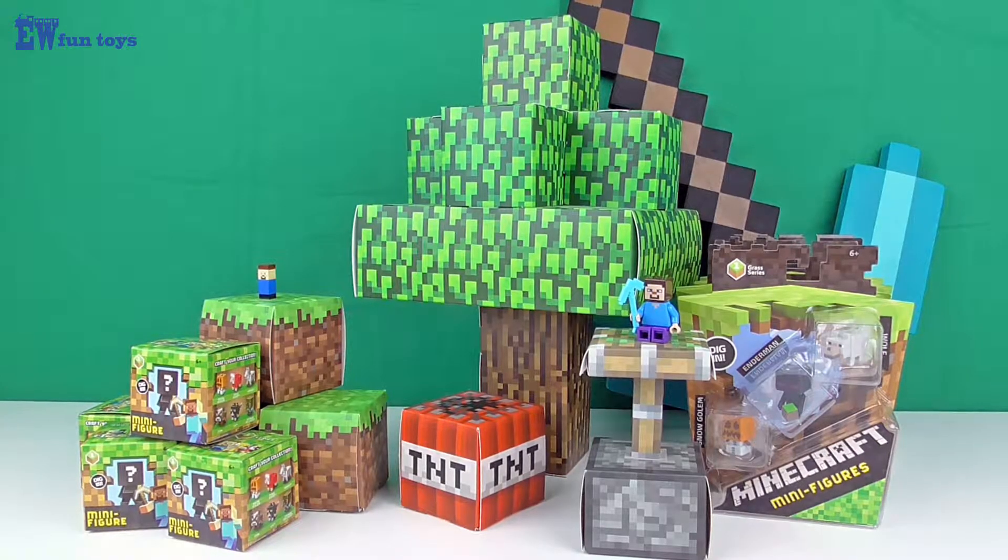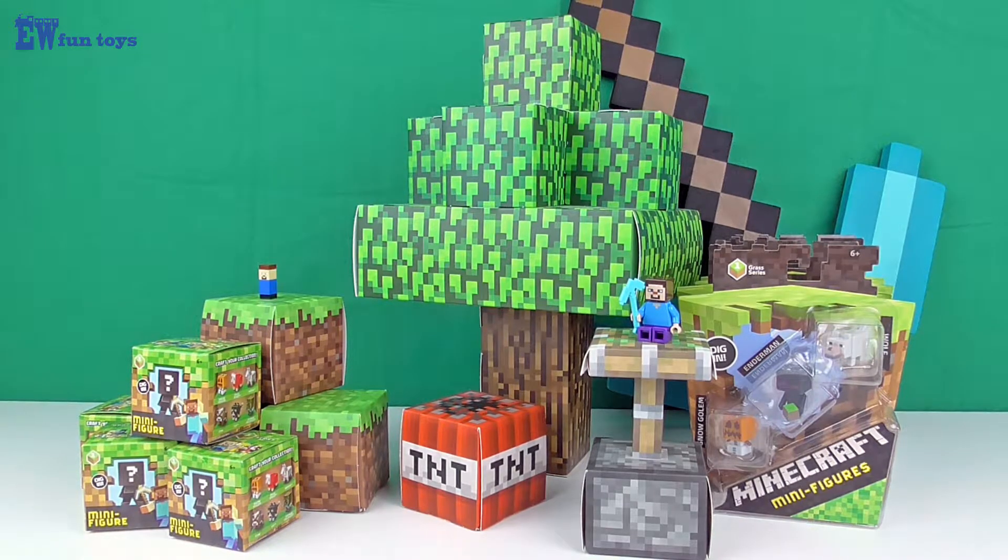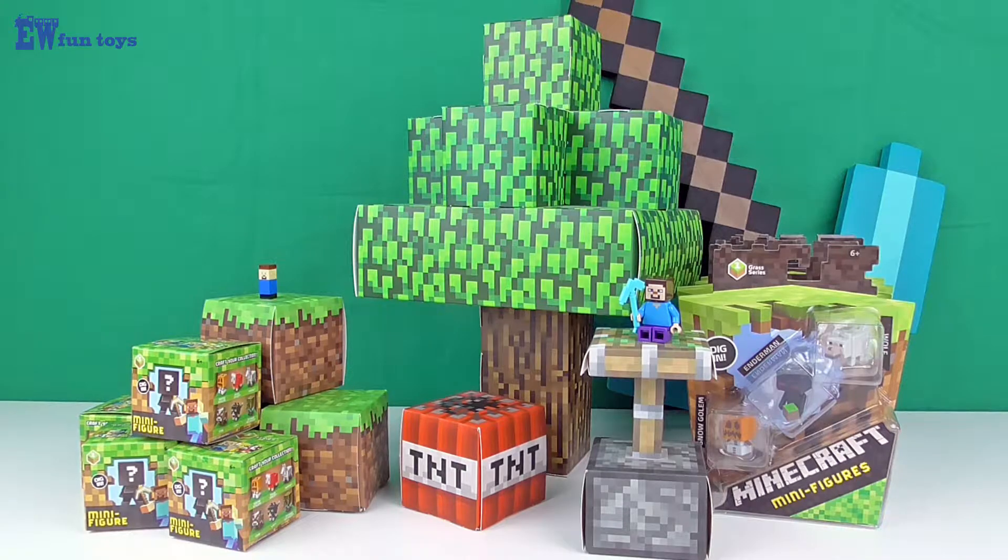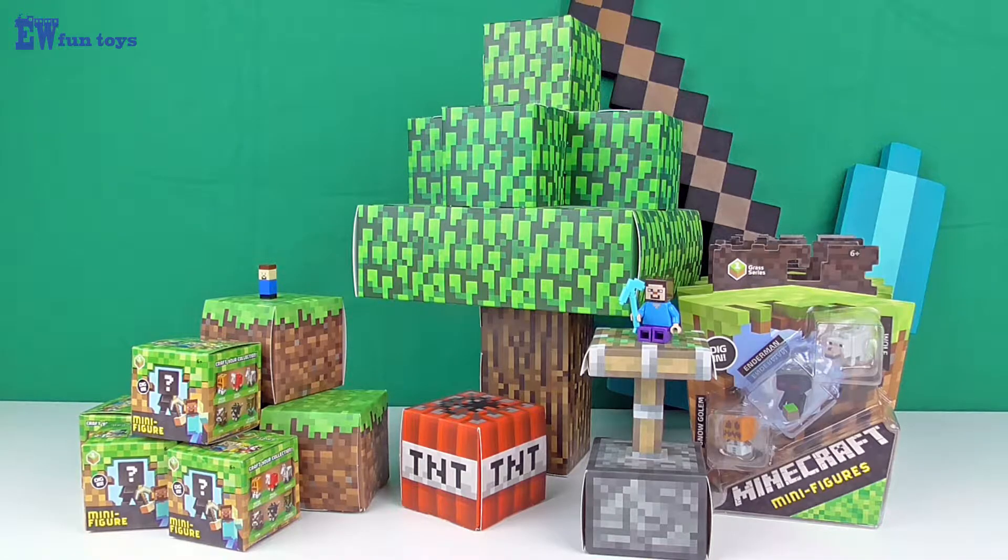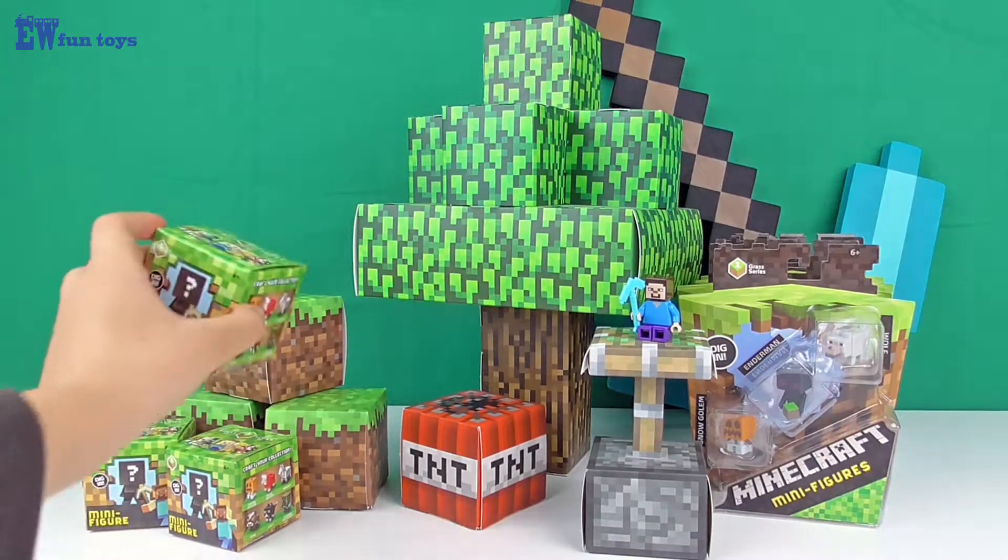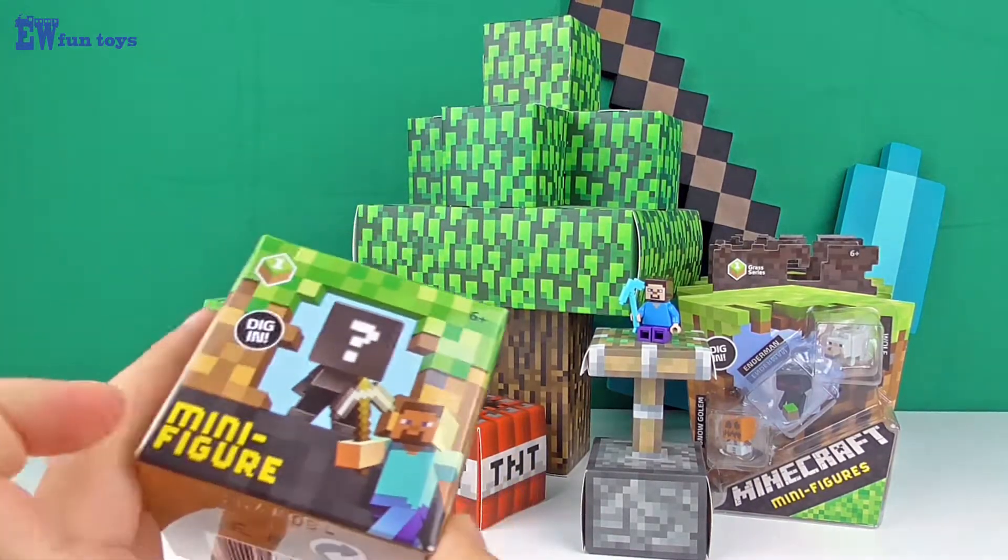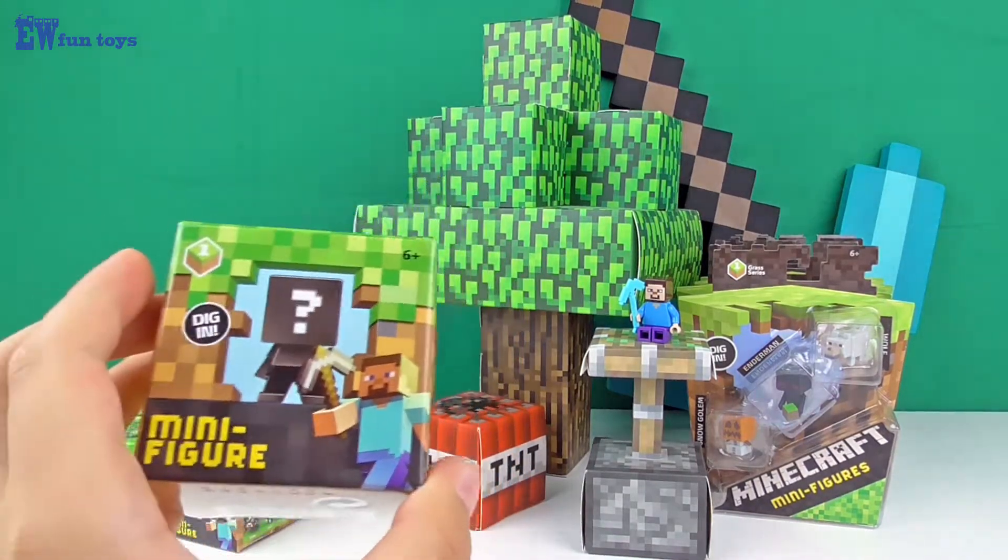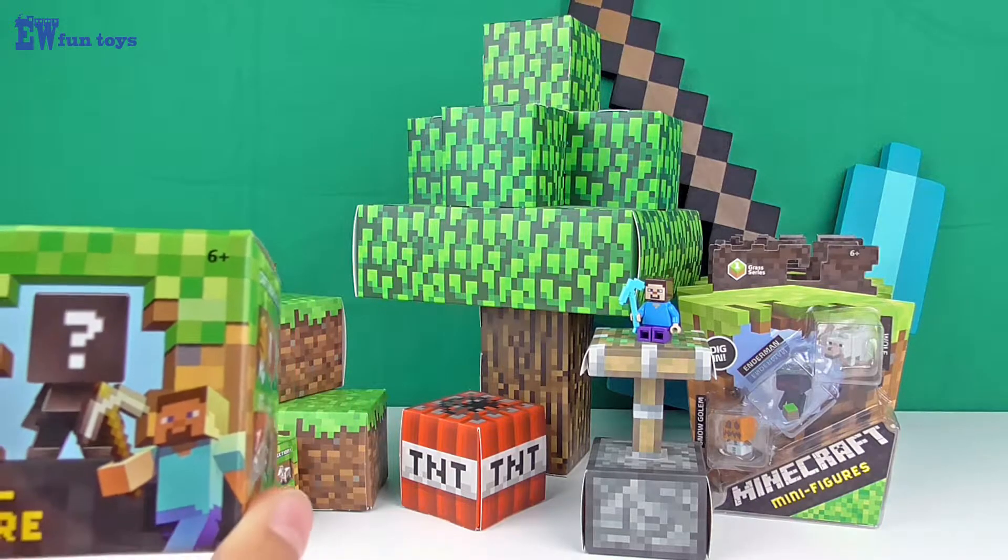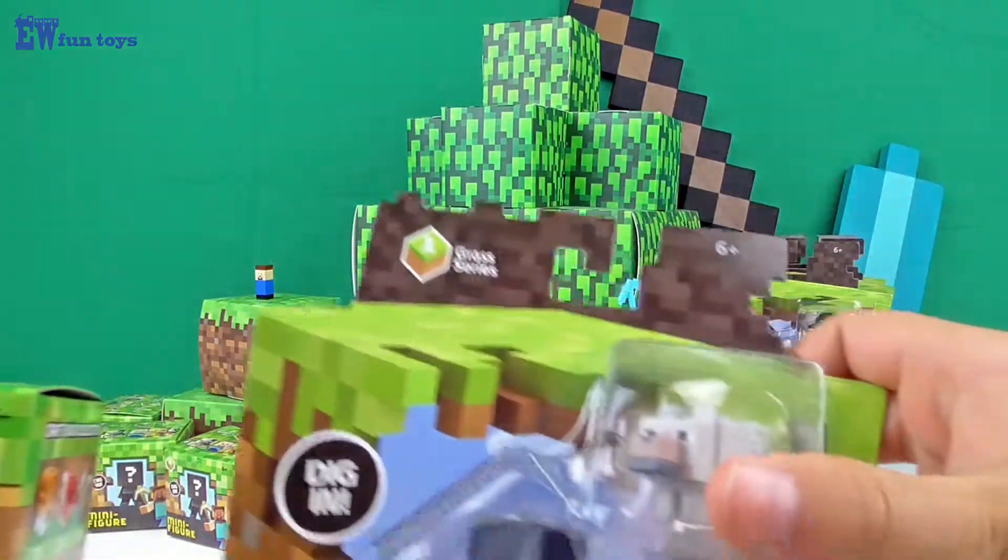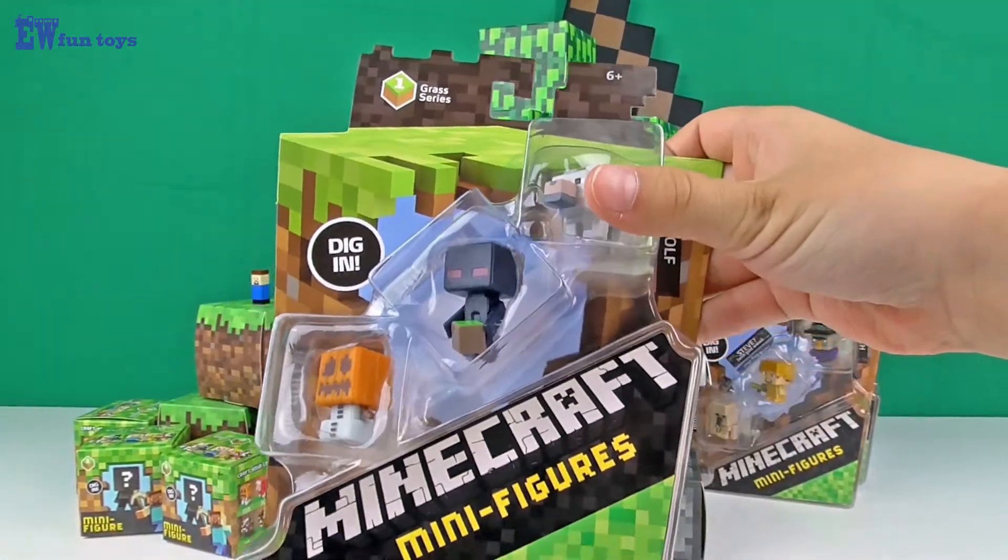Hey everybody, this is EWFuntoys review on the Minecraft minifigures grass series. This collection has a total of 16 minifigures in which four of them can only be found in blind boxes. The other 12 can be found in blind boxes as well as in these packages of three figures pack.